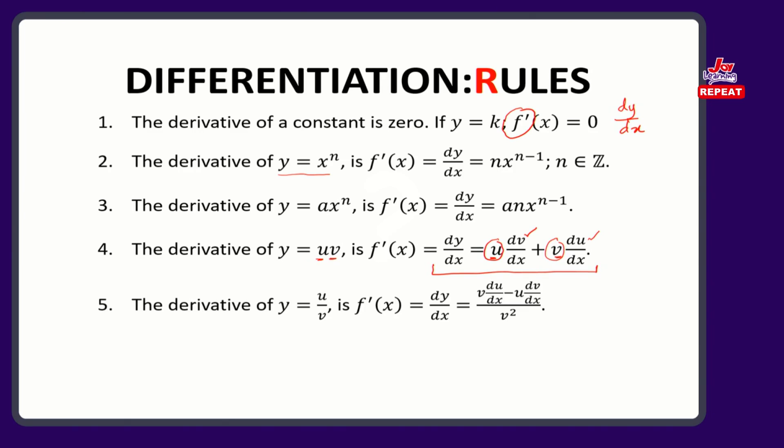Then there is the quotient rule. This time one function is dividing another. In that case the quotient rule is a little more complicated. It's almost like the product rule, except this time you hold v first, differentiate u with respect to x, minus — not plus, minus — you hold u and differentiate v with respect to x, divided by the square of v. For now, use it as you understand, and subsequently you'll appreciate how it came about from first principles.